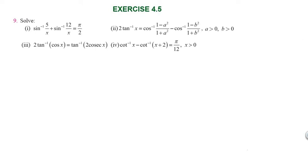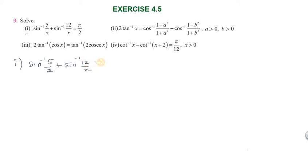Hi students, greetings from Success Education Academics. This is question number 4.5. First problem: sin⁻¹(5/x) + sin⁻¹(12/x) = π/2. Rearranging, sin⁻¹(12/x) moves to the other side, giving sin⁻¹(5/x) = π/2 minus sin⁻¹(12/x).